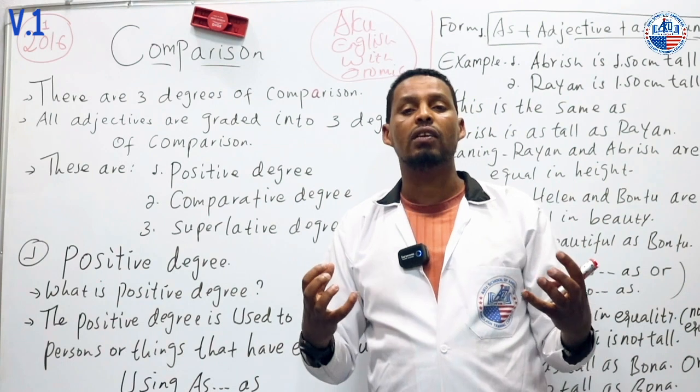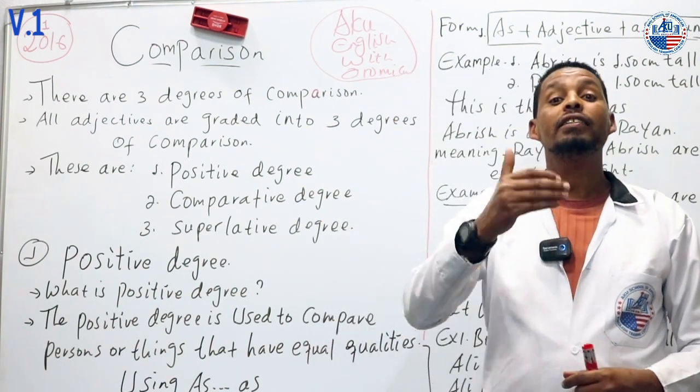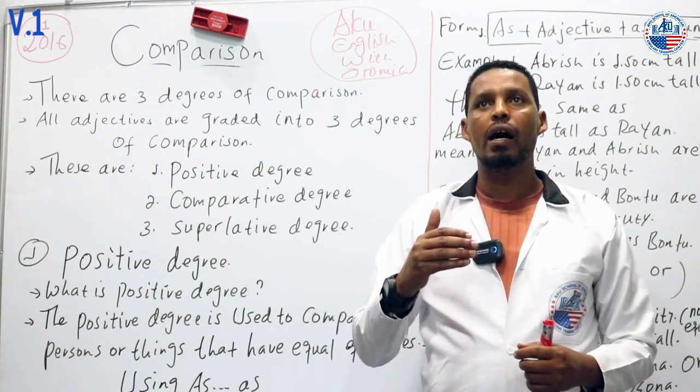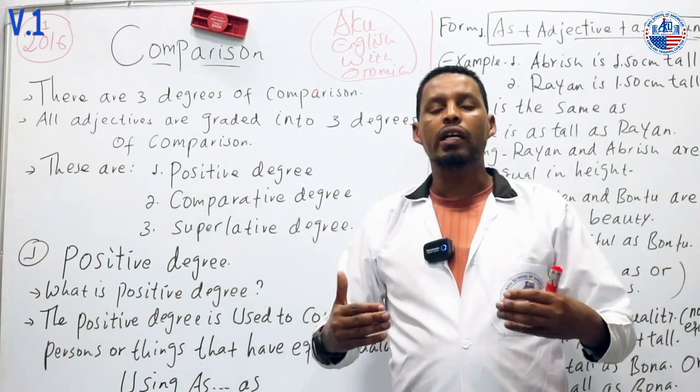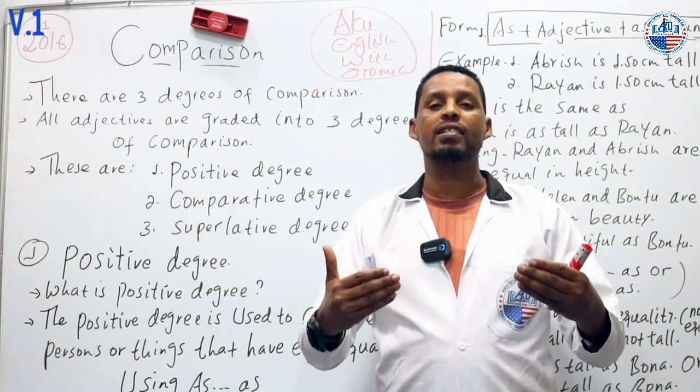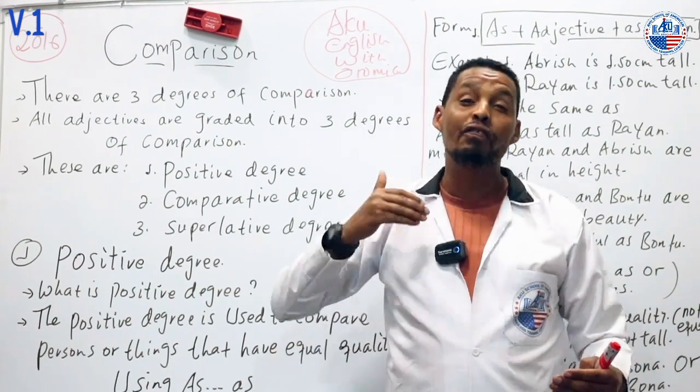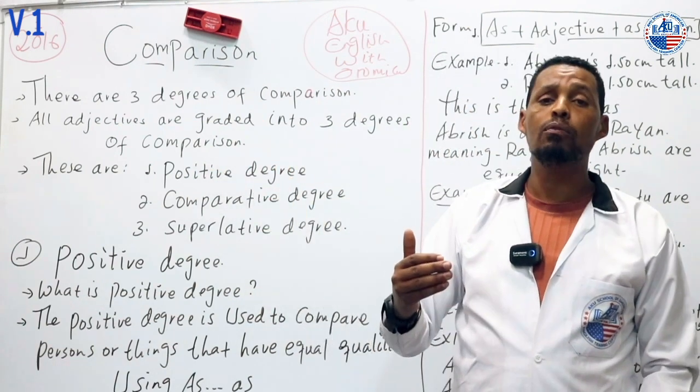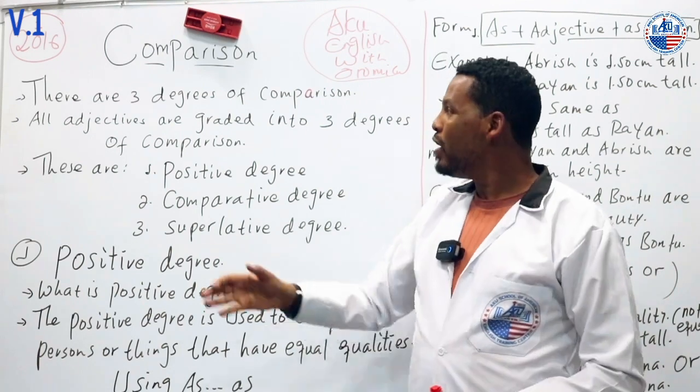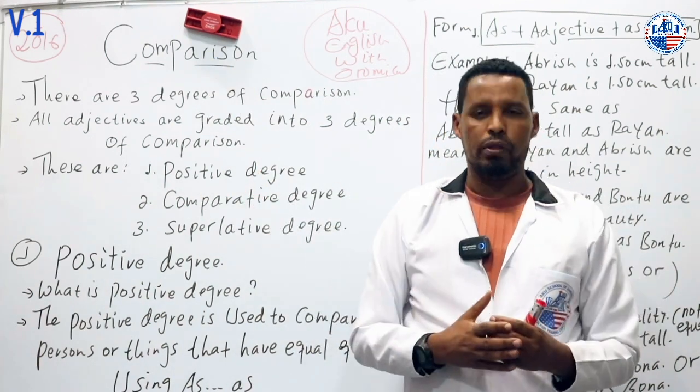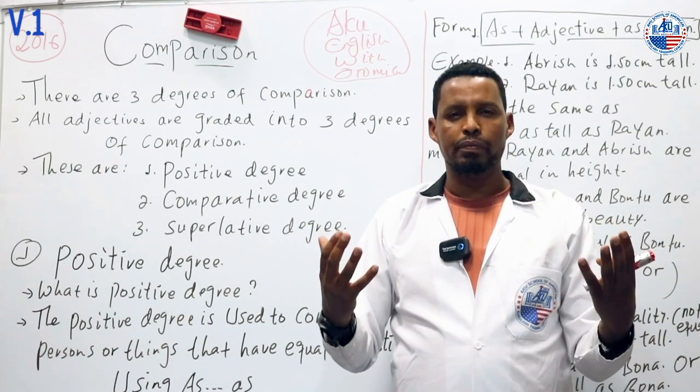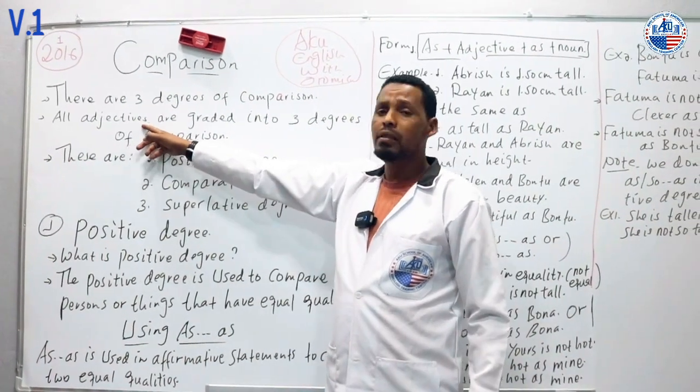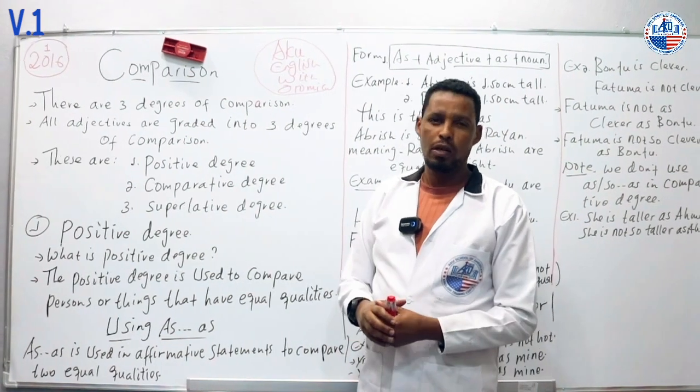First, what is adjective? Adjective in English means it's a word that describes or that modifies a noun or pronoun. We use adjectives in comparison, not verbs. Adjectives are graded into three degrees for comparison.